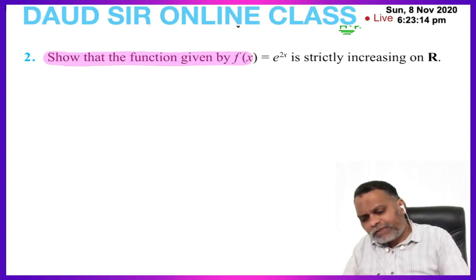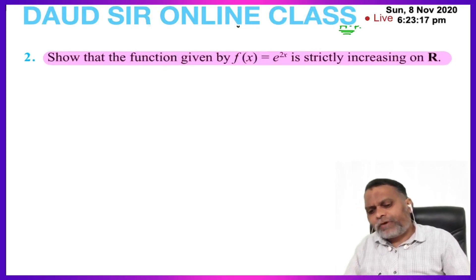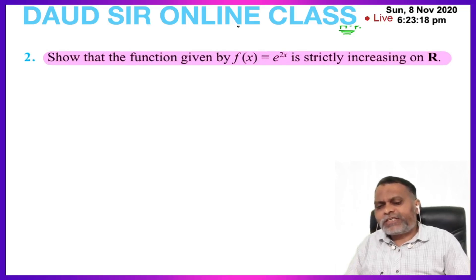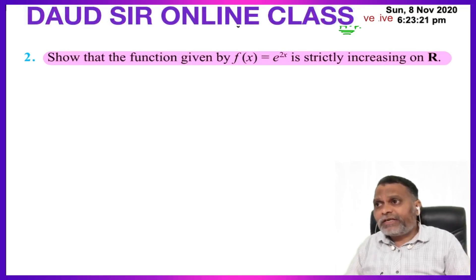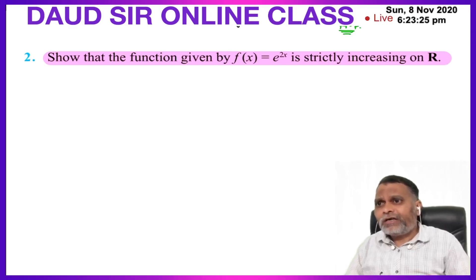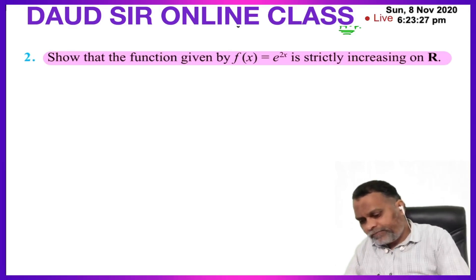Show that the function given by f(x) = e^(2x) is strictly increasing on R. R is real values. For strictly increasing on R, this derivative should be greater than 0.